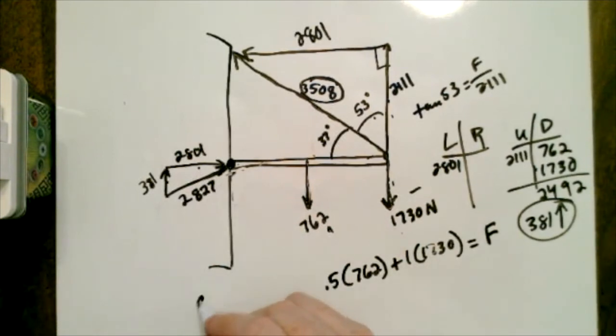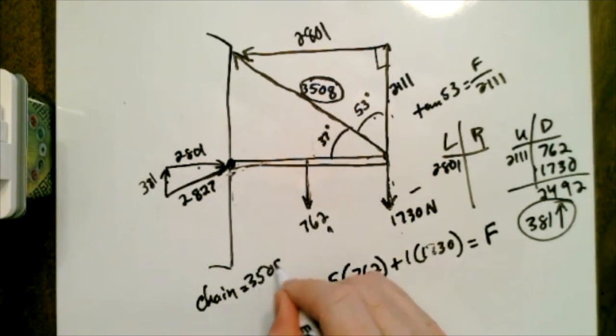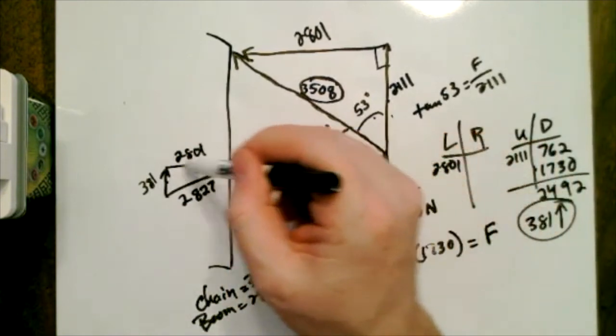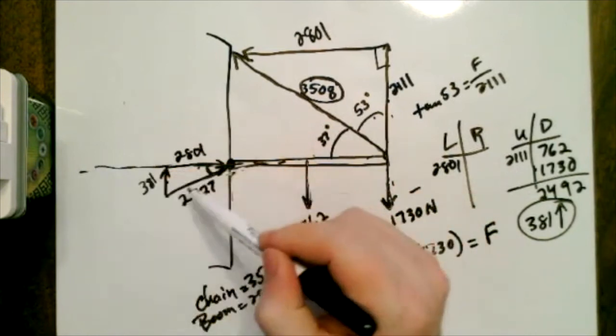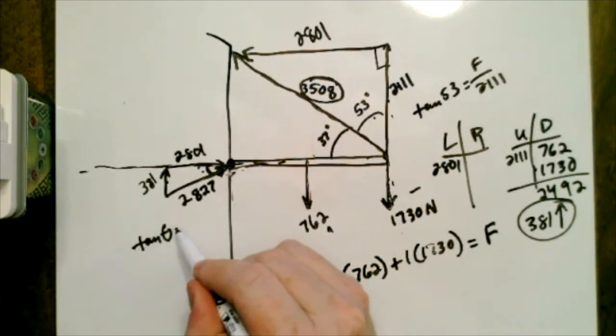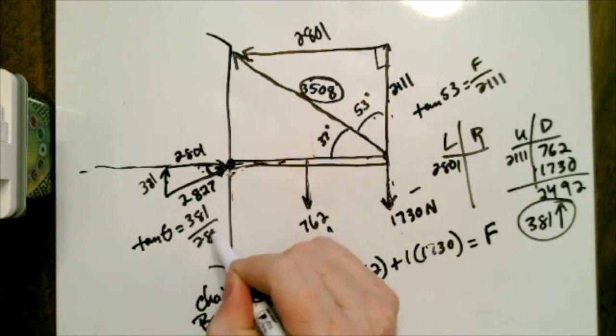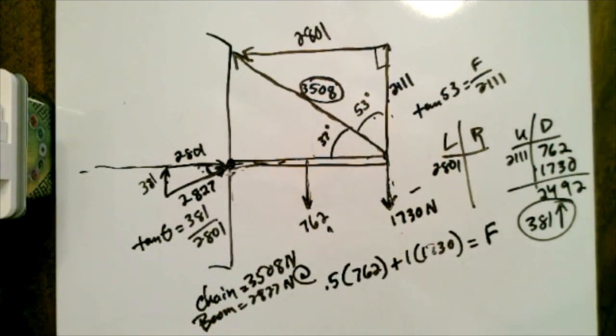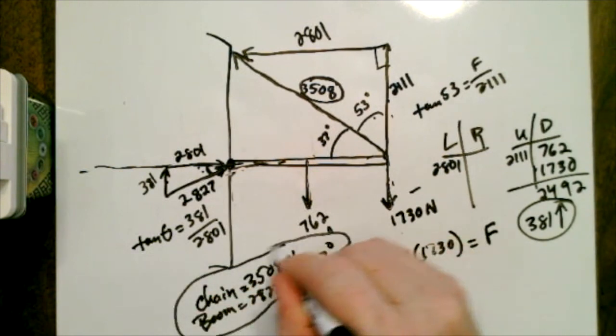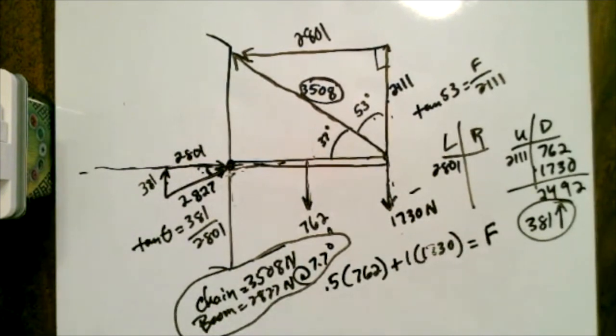So the chain was 3508 newtons, and the boom is 2827 newtons. And what you have to tell me, though, is what's this angle in here. Technically, I always extend the boom out, and then I figure out what's the angle between the extended boom and the boom force coming in here. So I want this angle here, and the tangent of that angle would be 381 over 2801. So 381 divided by 2801 inverse tangent is 7.7 degrees. So there's all your answers for solving this boom chain problem. You got the chain, and you got the boom.